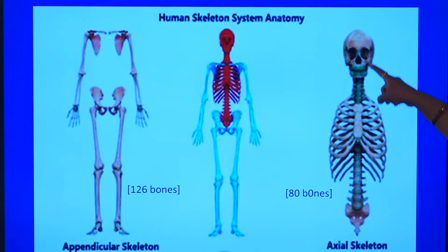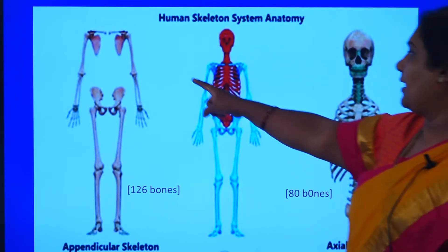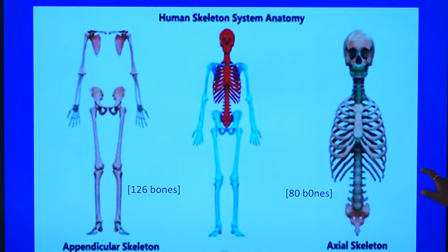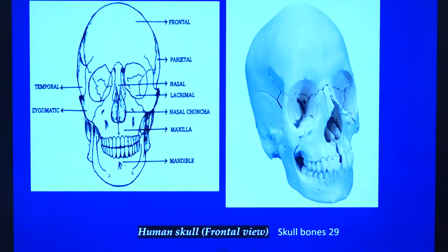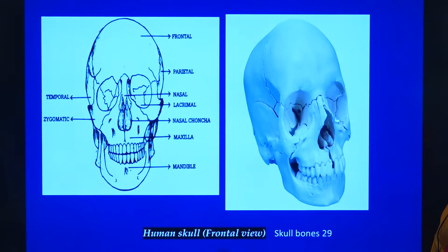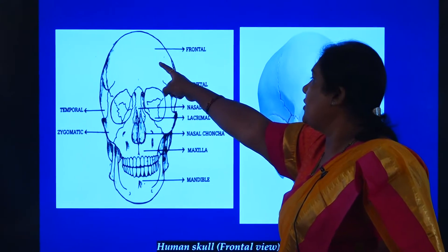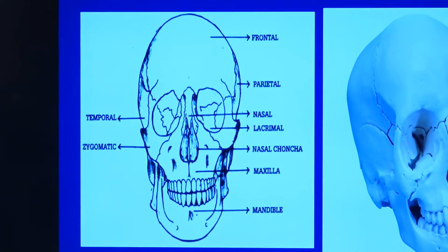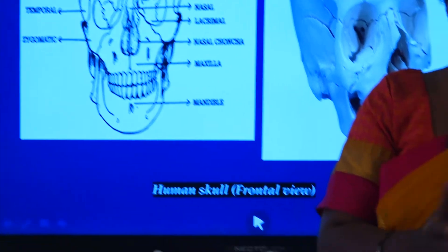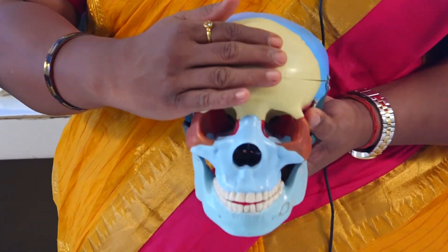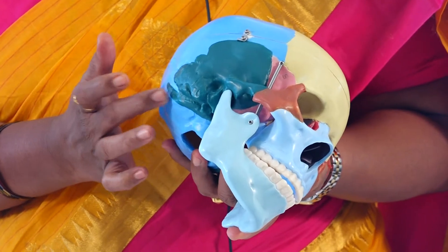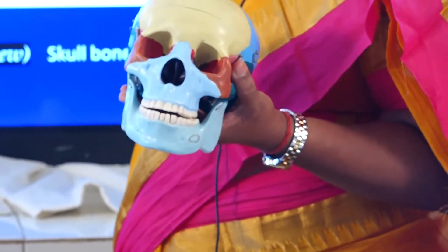You can see here: skull, vertebral column, and the ribcage belong to the axial skeleton. For the appendicular, you see forelimbs, hindlimbs, pectoral girdle, and then the pelvic girdle. Now let us look into the study of the skull. There are around 29 skull bones. Here you can find a frontal lobe, a parietal lobe, and on the sides there is the temporal lobe and then the occipital lobe.